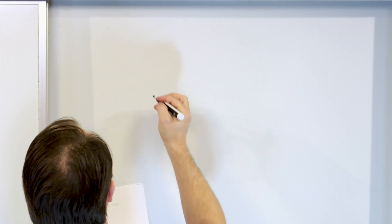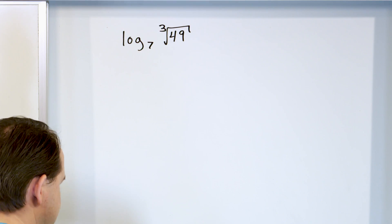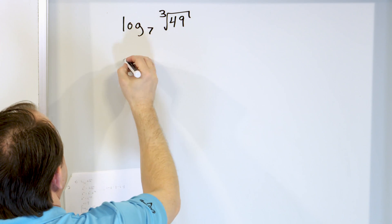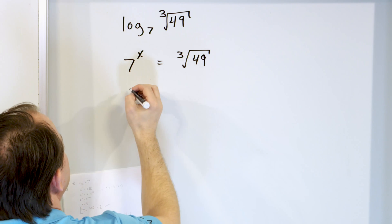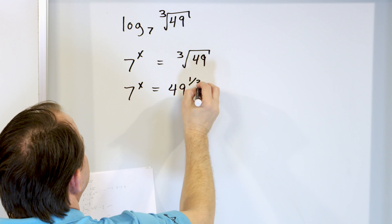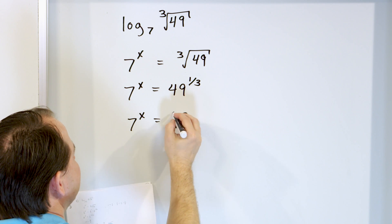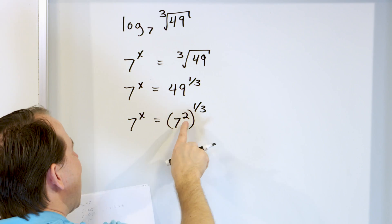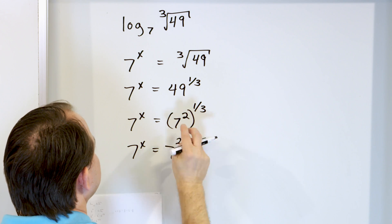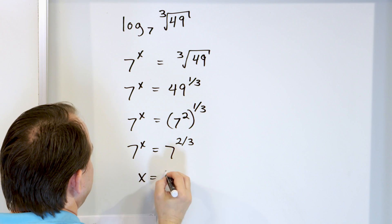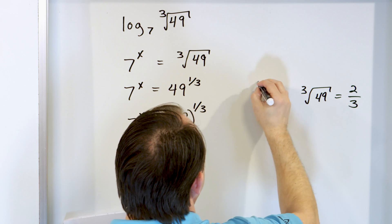Last problem: logarithm base 7 of the cube root of 49. So 7 to the power of something equals the cube root of 49. Write the cube root as an exponent: 49 to the 1/3 power. Since 49 is 7 squared, this becomes 7 squared to the 1/3 power. A power raised to a power means multiplying: 2 times 1/3 equals 2/3. So 7 to the x equals 7 to the 2/3, meaning x equals 2/3. Logarithm base 7 of the cube root of 49 is equal to 2/3.